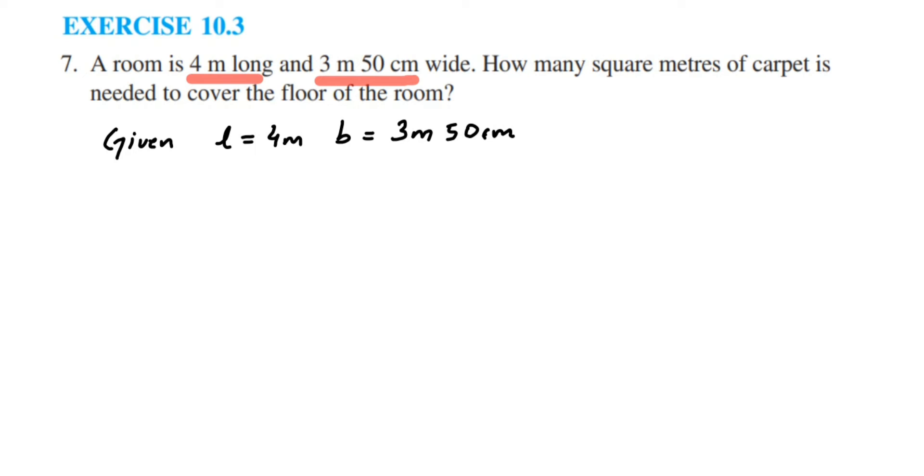So this 50 centimeters we have to convert. Breadth equals 3 meters plus 50 centimeters. We know that 1 meter is equal to 100 centimeters. When you are converting centimeters into meters - converting a smaller unit to a greater unit - we have to divide.